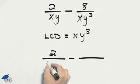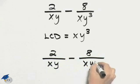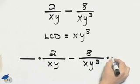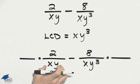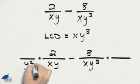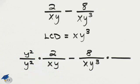To do that, I will rewrite the fractions as they were given, and then I will multiply each of these fractions by a form of 1 that will allow me to get a denominator of xy cubed. Now for this to look like xy cubed, I'll have to multiply by y squared, but of course we need to multiply by y squared in the numerator as well.